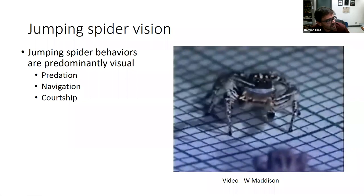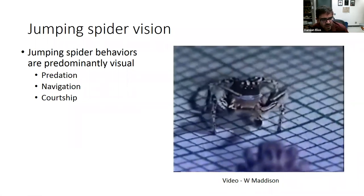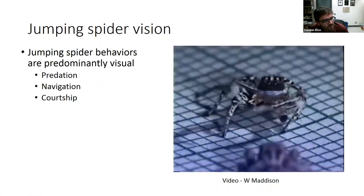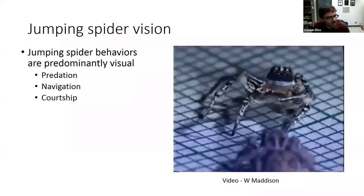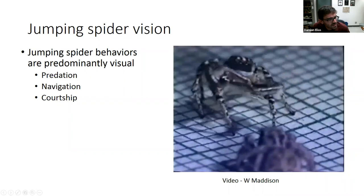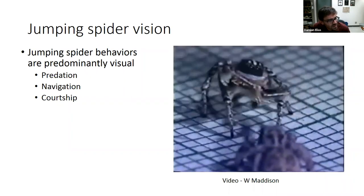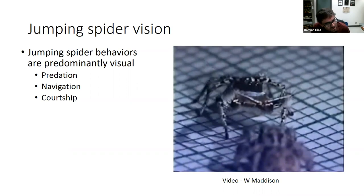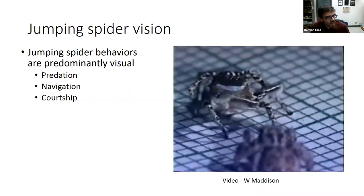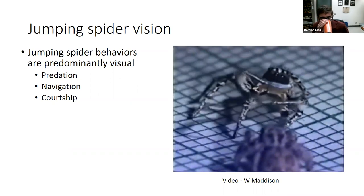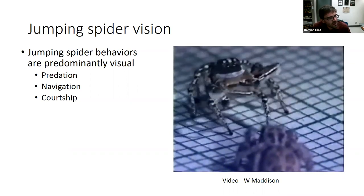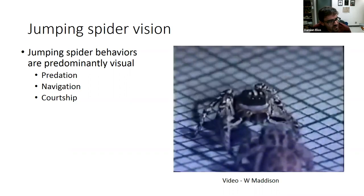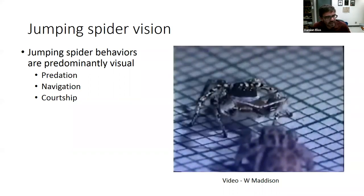Most jumping spider behavior is thought to be predominantly visual. Here is an old video of a jumping spider dance — this is the type of way that males court females. You have a female on the bottom, a male performing a very complicated dance. It goes through a pretty stereotyped motor pattern — the female is assessing its stripes, coloration patterns, and movements, and jumping spiders use all that information to make decisions.